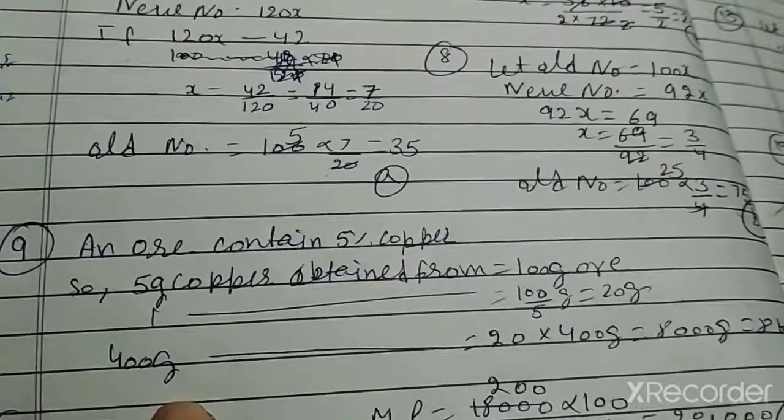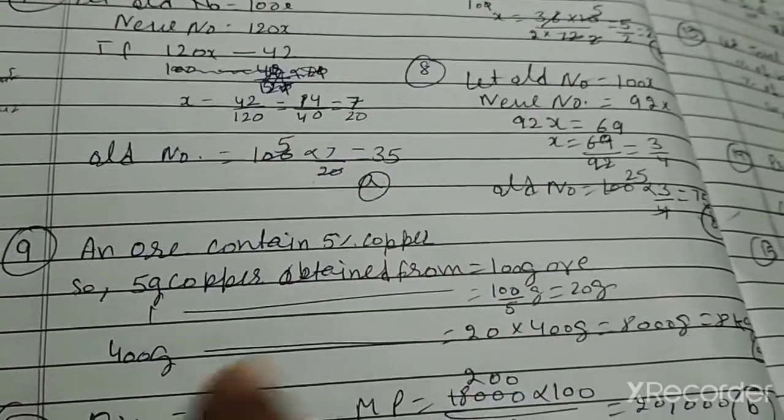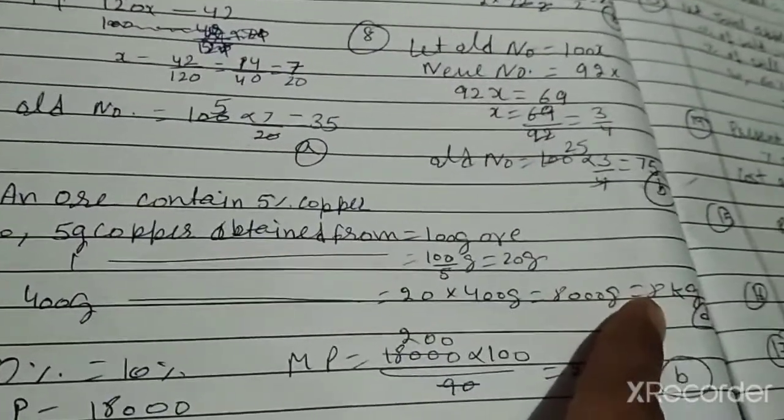Question number nine: 5% copper. If there is 5% copper, then how much will it be in 400 grams? It means 5% of copper is in 100 grams, so one gram will be in 100 upon 5. Total 8,000 grams, which means 8 kg.